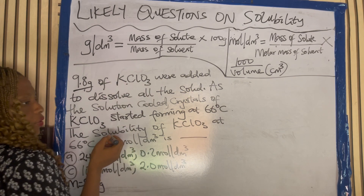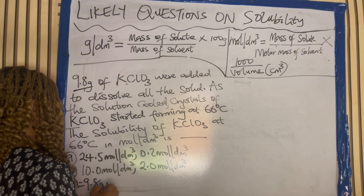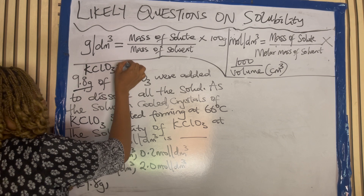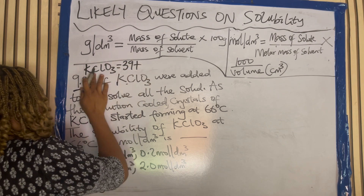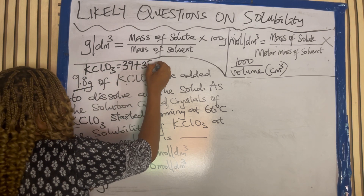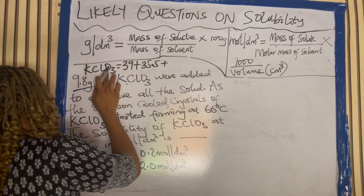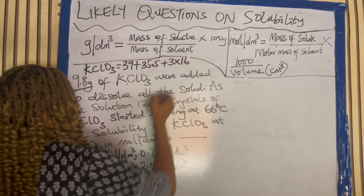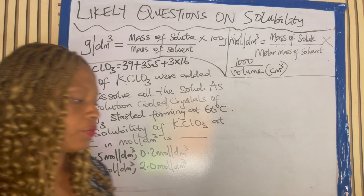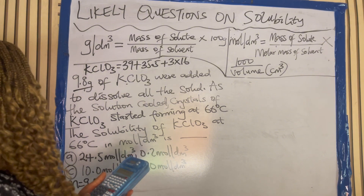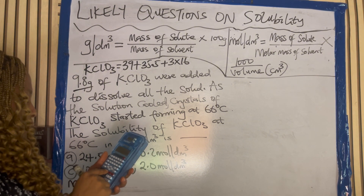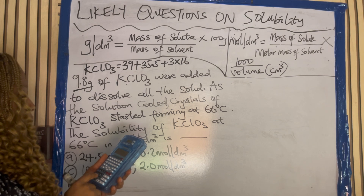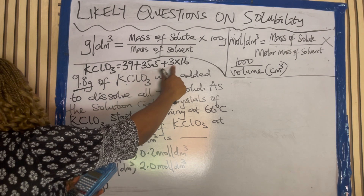The molar mass of potassium chlorate — KClO3. Potassium is 39, plus molar mass of chlorine 35.5, plus 3 times 16 — this 3 is affecting oxygen only. So: 39 plus 35.5 plus 48. This times this will give you 48. So you have it to be 122.5.